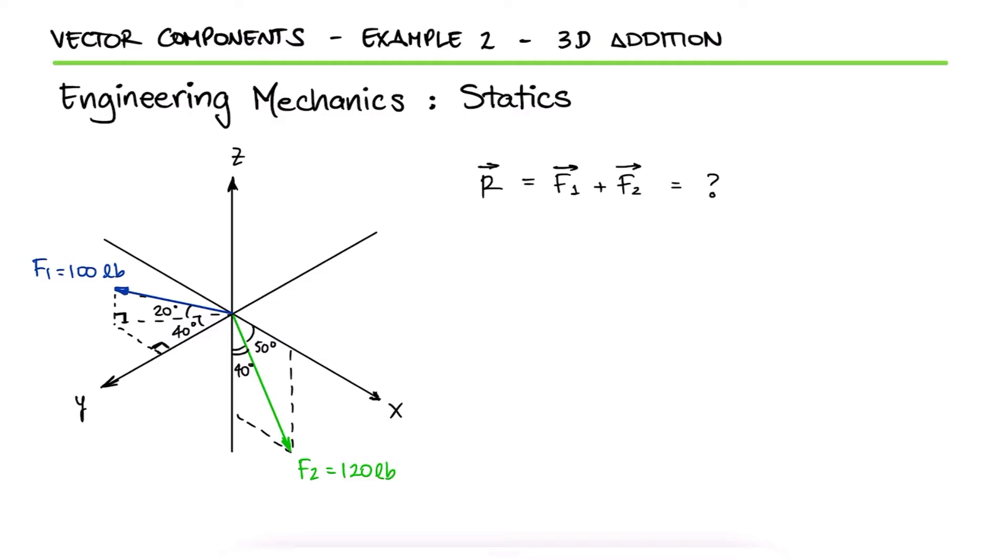To find this resultant vector R, we first need to find its components in the x, y, and z axes. To do that, we need the x, y, and z components of both vectors F1 and F2.